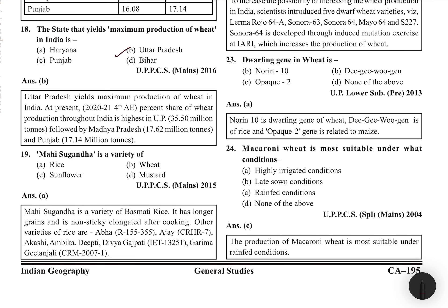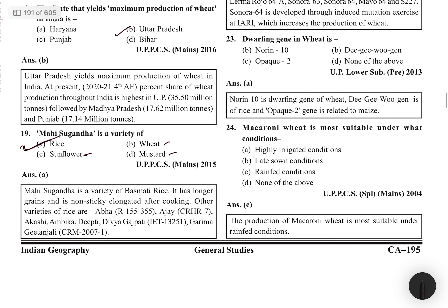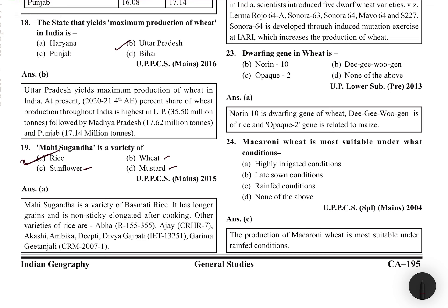Mahi Sugandha is a variety of rice. It is a Basmati rice variety with longer, non-sticky grains that remain elongated after cooking. Other rice varieties include Abha, Ajay, Akashi, Ambika, Deepti, Divya Gajpati, Garma, and Gitanjali. Questions can come from recent news about new varieties, so stay updated.